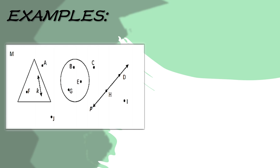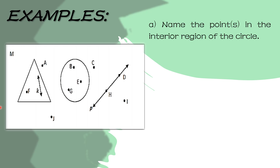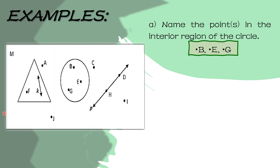So let's now have the examples. Kung mapapansin nyo, meron tayong triangle, circle, line, pero lahat sila ay nasa loob ng plane M. So let us answer the given questions using these given figures. First, name the point or points in the interior region of the circle — pangalanan daw natin yung mga points na nasa loob ng circle. So those points are point B, point E, and point G.